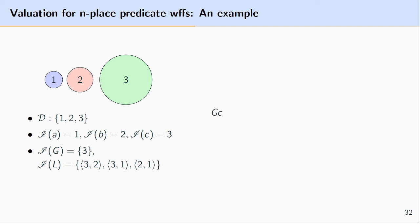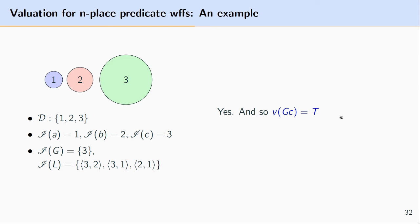How about GC? We ask: is the interpretation of C a member of the collection picked out by the interpretation of G? The interpretation of C refers to the green circle, or circle three. Is the green circle found in the collection picked out by G? Yes, the green circle is in this collection of green things, so GC is true.